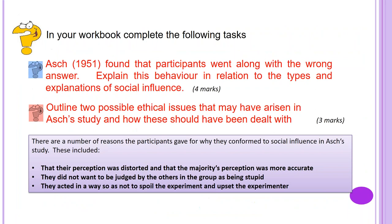In your workbook, you should now complete the following tasks. If you're not using one of our workbooks, have a go at these tasks on a piece of paper. ASH in 1951 found that participants went along with the wrong answer. Explain this behaviour in relation to the types and explanations of social influence covered in lessons 1 and 2. This is for 4 marks.